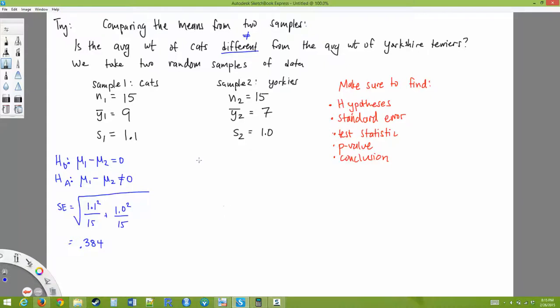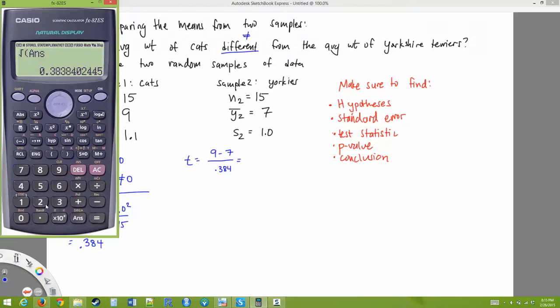And my test statistic, T, is going to be the observed difference, 9 minus 7, over my standard error, 0.384. Okay, so I'm going to just do 2, or 9 minus 7. I can do that in my head, no problem. I get 5.21.